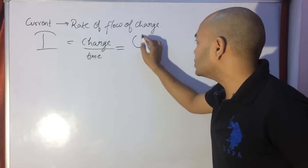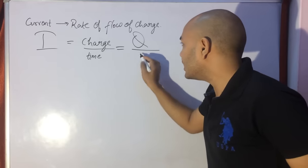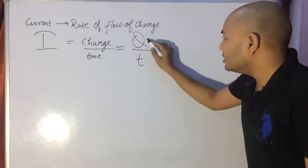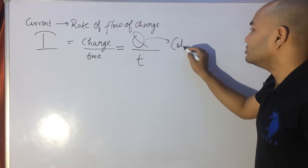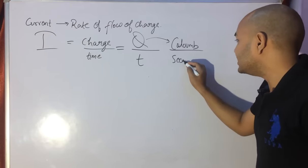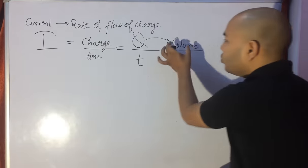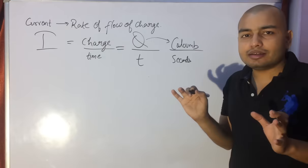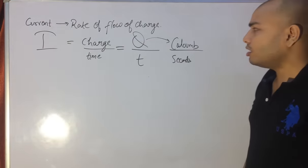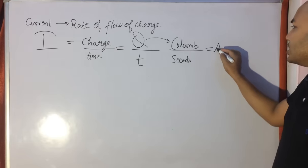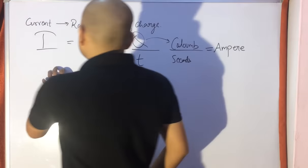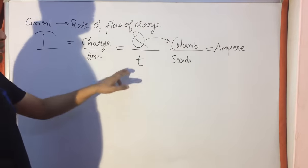The symbol for charge is Q and the symbol for time is T, so Q upon T equals I. The unit for charge is coulomb — named after the scientist Coulomb — and the unit for time is seconds. So the unit for current is coulomb per second. Coulomb per second has a special name called ampere. So current equals charge upon time, Q upon T.